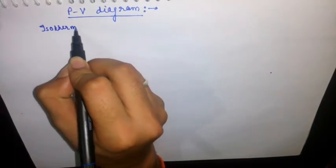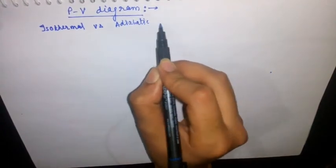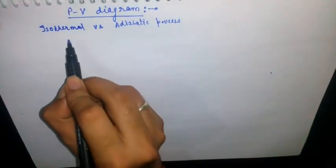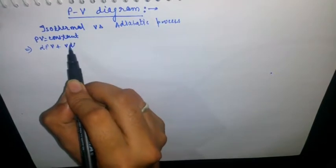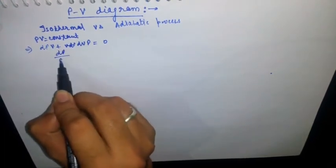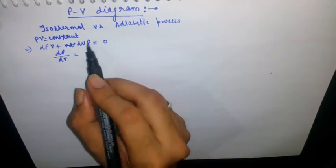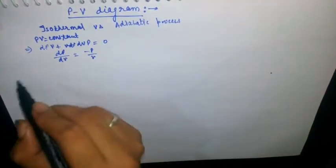For the isothermal process, PV is equal to constant. If we differentiate this equation, we get dp·V + p·dV = 0, so dp/dV equals minus p/V. This is the first equation.